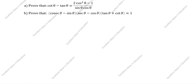Hi friends, welcome to my channel Excellent Ideas in Education. Today we are going to solve this trigonometry identity problem. This is a very important problem. Prove that cot θ minus tan θ is equal to 2cos²θ minus 1, divided by sin θ cos θ. We will prove LHS equal to RHS.